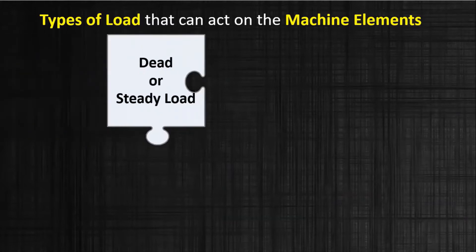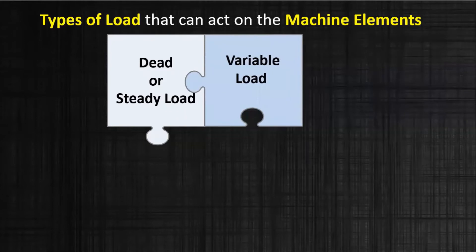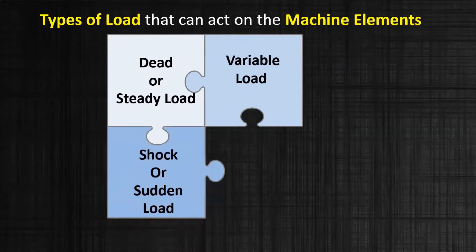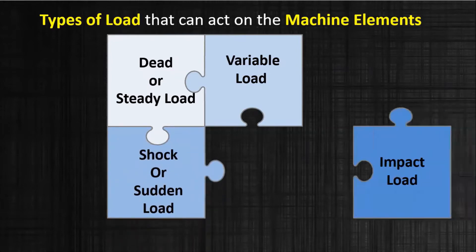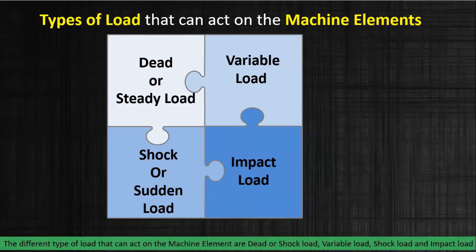The different types of loads that can act on a machine element are: the dead or steady load, the variable load also called a fluctuating load, the shock or sudden load, and the impact load.